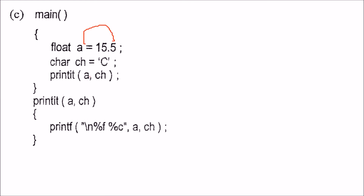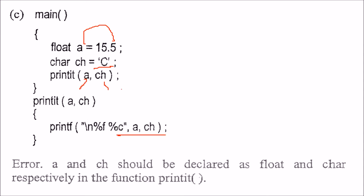a is 15.5, character is 6, and we are passing 15.5 and c. We are trying to print a and ch. The problem is a and ch are not being given any data type. Whenever you write a function definition, you need to give the type for each parameter.